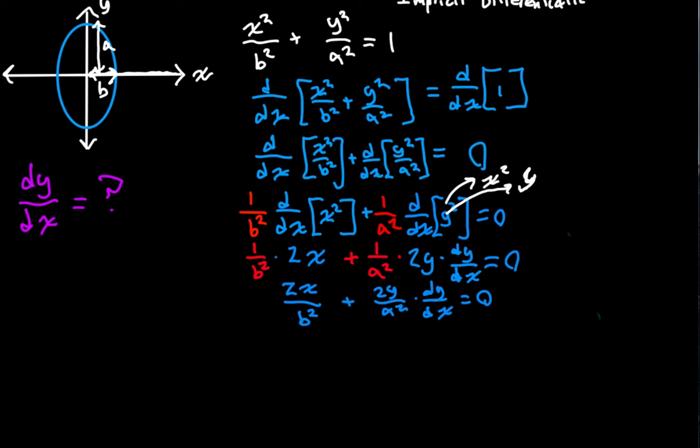We're going to subtract 2X over B squared from both sides. So, negative 2X over B squared is equal to 2Y over A squared times DY DX.